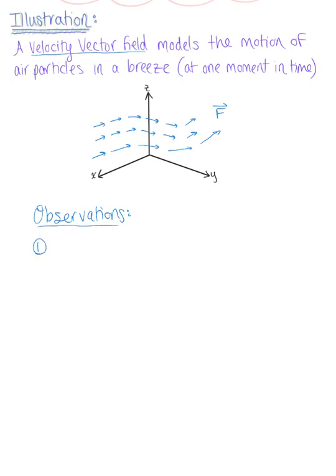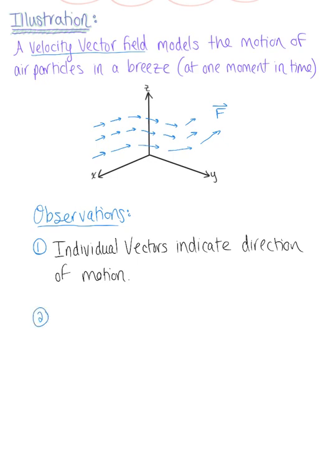The first observation is that these individual vectors indicate the direction of motion. The second observation is that the length of each vector indicates the speed.